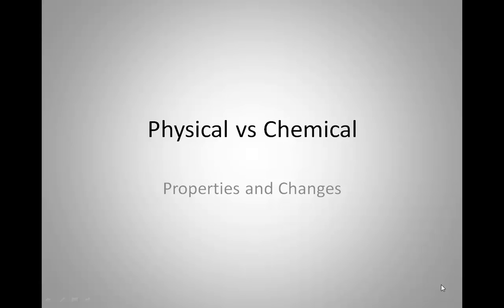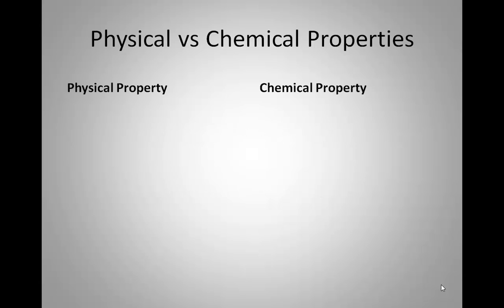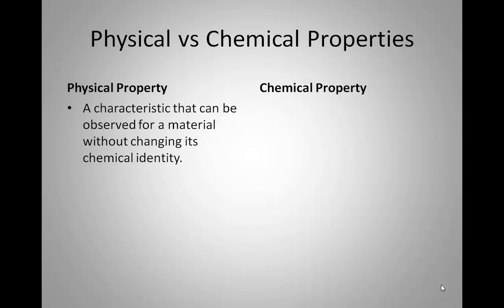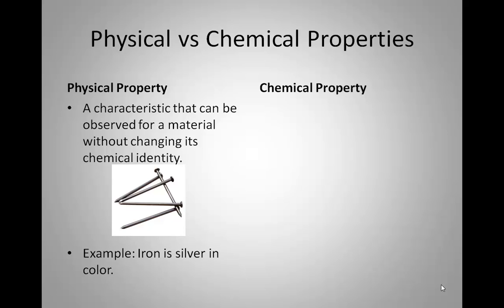Today we're looking at physical and chemical properties and changes — the differences between the two. A physical property is a characteristic that can be observed for a material without changing its chemical identity. It's an observation you can make about a substance without changing what the substance is made of. For example, if I give you a pile of iron nails, you can look at them and say iron is silver in color — you have not changed anything about those nails. They are still made of iron.